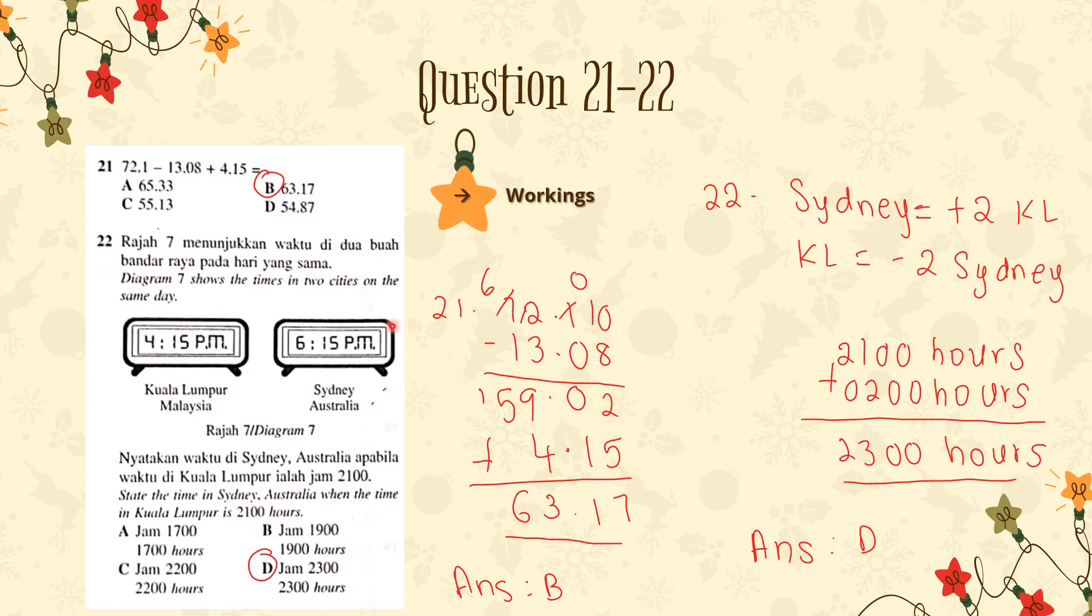Alright, let's move on to Question 22. The instructions are, Diagram 7 shows the times in two cities on the same day. And the question, state the time in Sydney, Australia when the time in Kuala Lumpur is 2100 hours. Alright, as you see here, this is a short quick info.